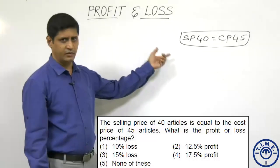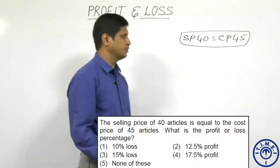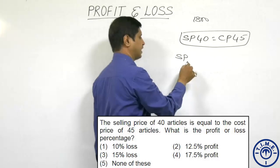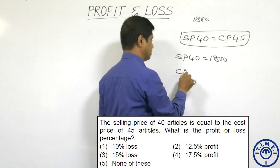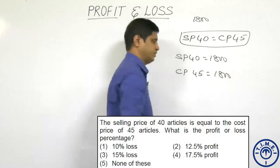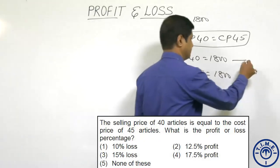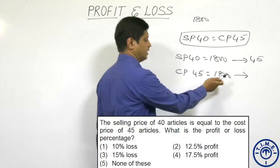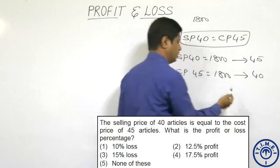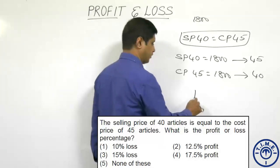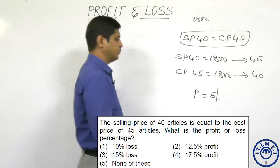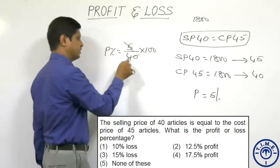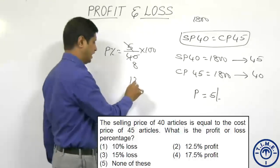The same question can be answered another way using the product of the two numbers, which is 1800. The selling price of 40 articles is 1800 and the cost price of 45 articles is also 1800. Cost per article: 1800/40 = 45 rupees (selling price). Cost price: 1800/45 = 40 rupees. SP is more than CP, resulting in a profit of ₹5. Profit percentage = 5/40 × 100 = 12.5 percent.